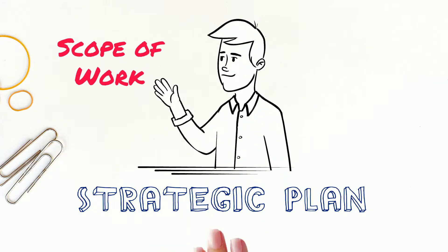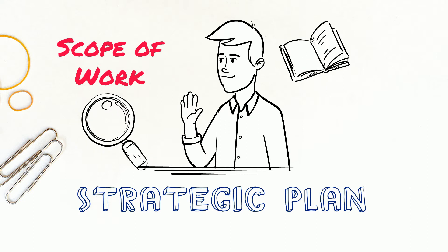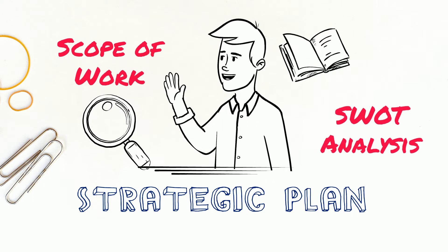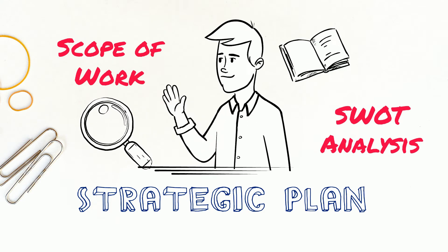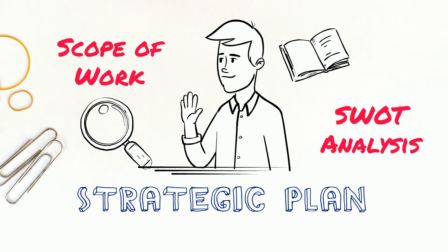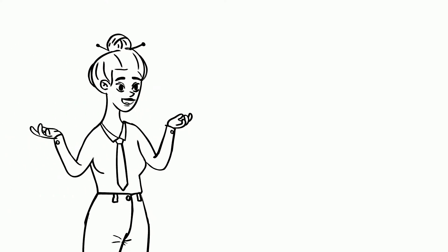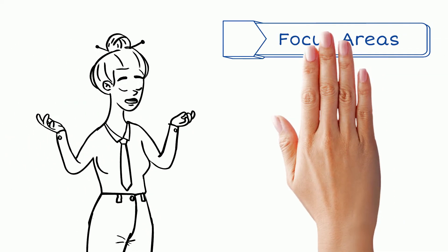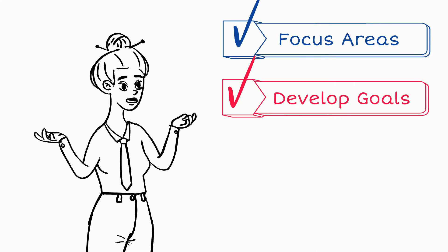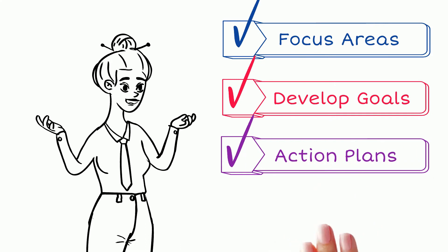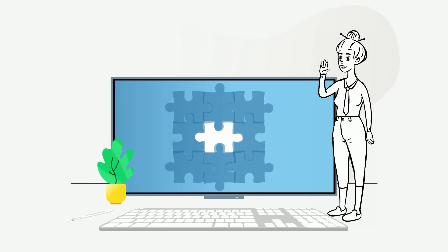A strategic plan defines the scope of the work to be done, analyzes strengths, weaknesses, opportunities and threats, formulates focus areas, develops goals, creates action plans, measures success and optimizes the use of resources. It's really that simple.